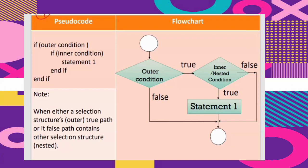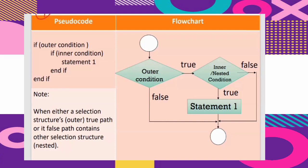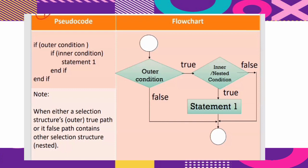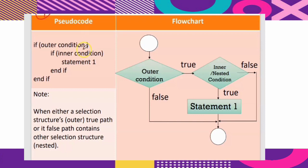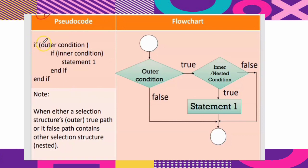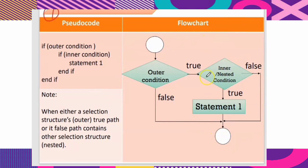First, we discuss the nested IF statement. In a nested IF decision-making statement, an IF statement is nested inside another IF statement — hence this control structure is named nested IF. The first line starts with IF followed by the first (outer) condition. If true, the computer will check the second (inner) condition. If that is also true, the first statement will be executed. Looking at the flowchart: if the first condition is true, the computer checks the second condition; if true, the first statement executes.